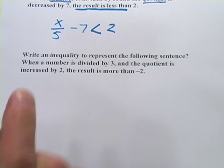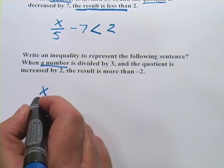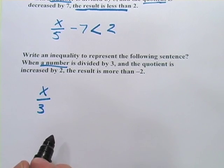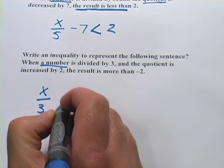Let's look at one more. When a number, that's x, is divided by 3, okay, we'll divide it by 3, and the quotient, that's this whole thing, is increased by 2.